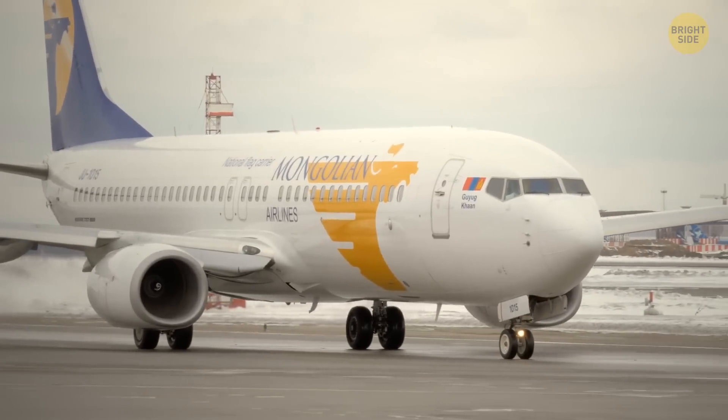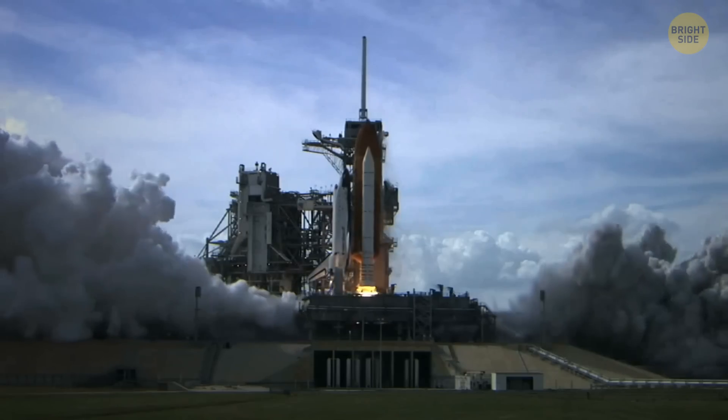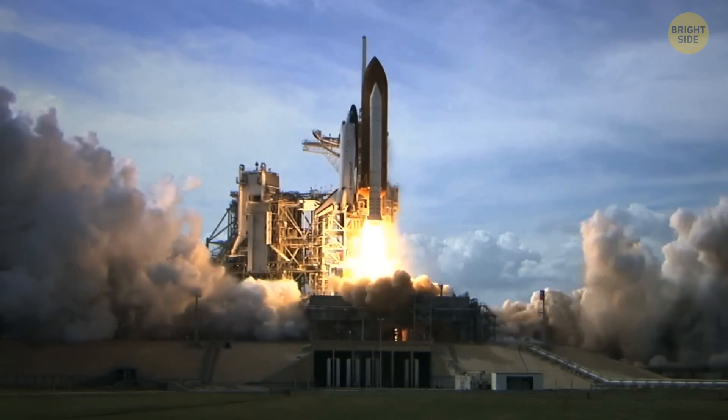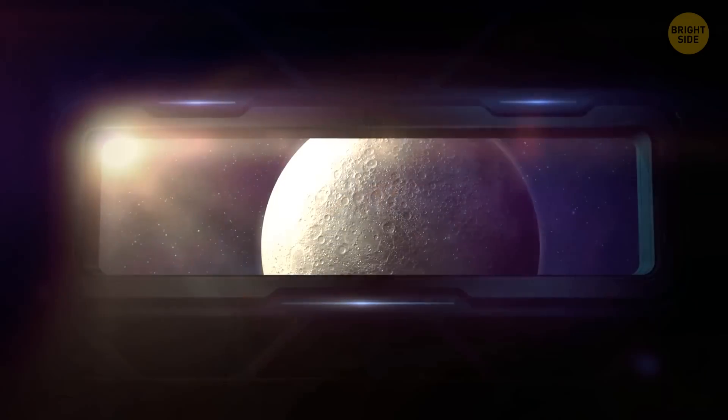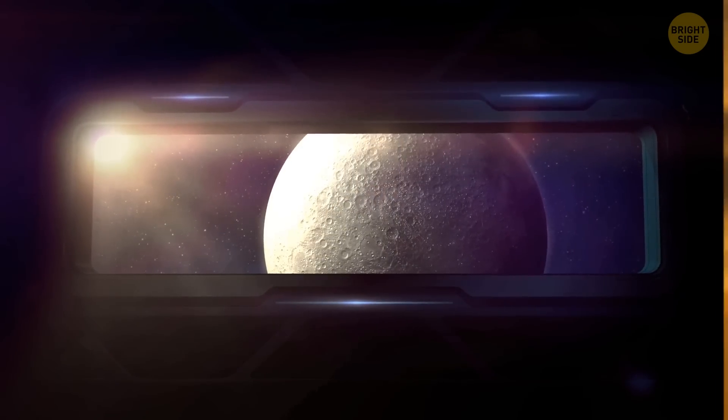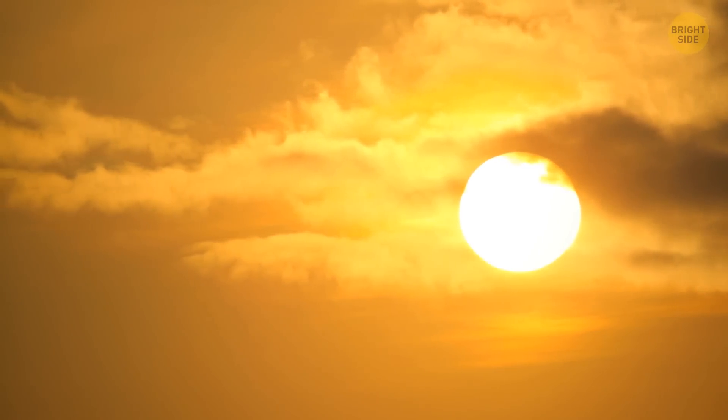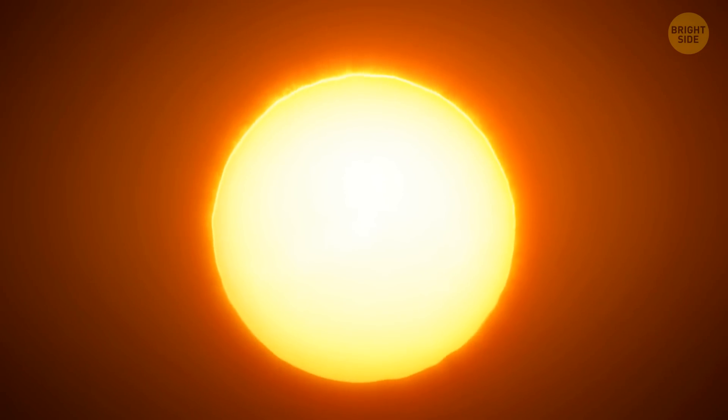Another myth about the sun is that it's yellow. Let's send you into space for this one. You look out the window, and… it's white! The sun only appears yellow to us through the filter of our atmosphere. The composition of the air and its thickness just distorts the light of the star.